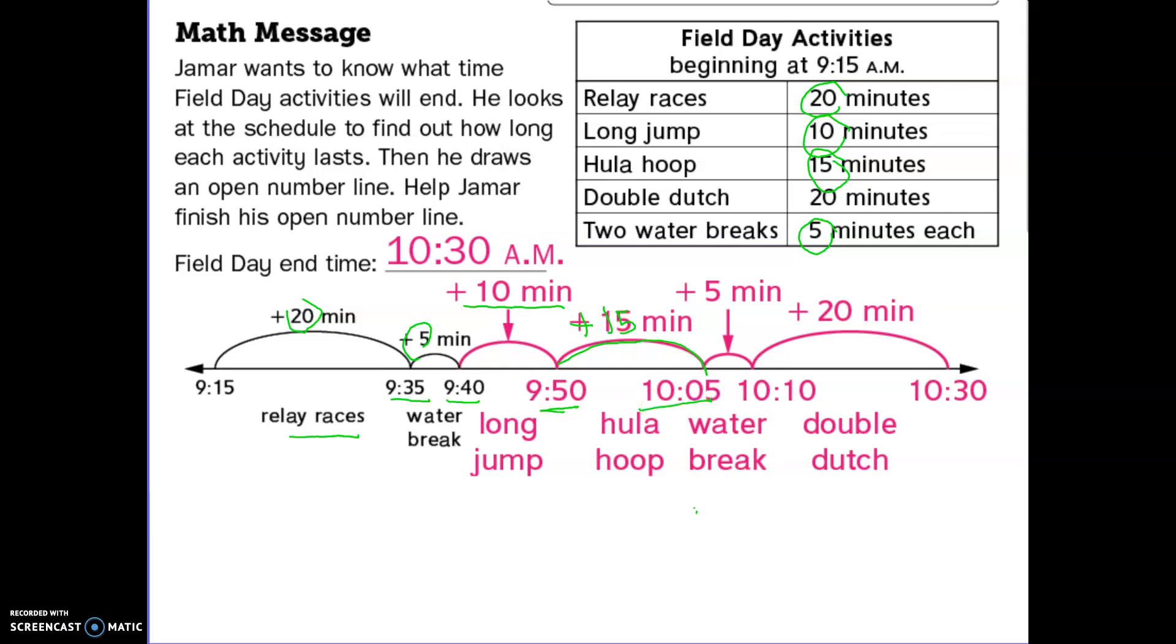That looks like a good time for a water break after doing two events. I know my water break is five minutes, so 10:05 plus 5 minutes is going to be 10:10. I'm going to do my last event, which is jumping the double dutch, that's 20 minutes. So 10:10 plus 20 minutes is 10:30. That means the end of field day would be 10:30 a.m.